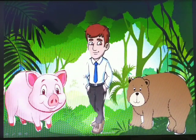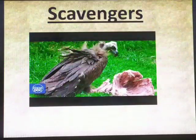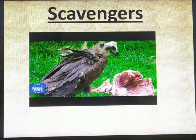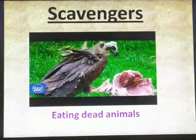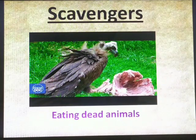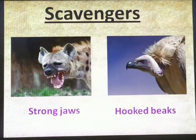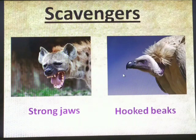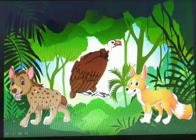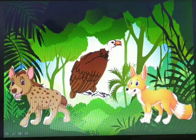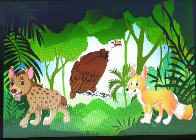More examples of omnivores include pig, human beings, and bear. Next we have scavengers. Scavengers are carnivores or omnivores animals which feed upon dead bodies or dead animals. These animals have strong jaws or hooked beaks that are used to tear meat from dead animals. Examples include hyenas, vultures, golden jackal, and many more.